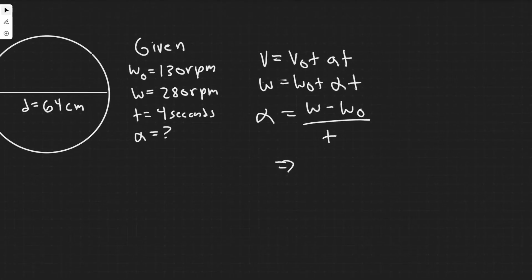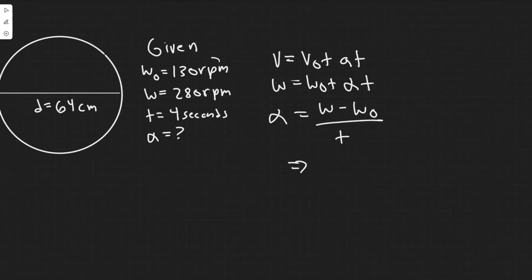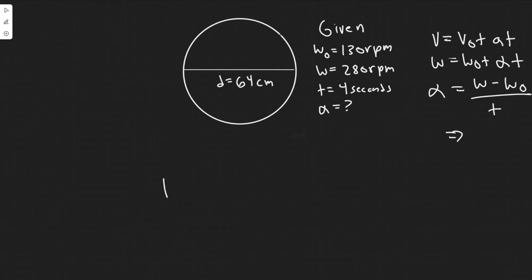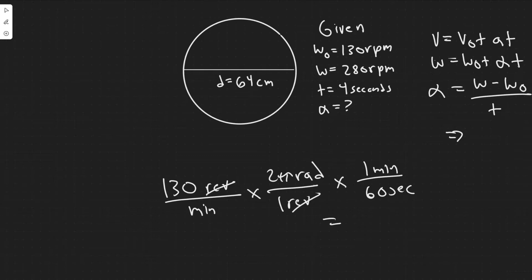There's an important thing to keep in mind when plugging in these values: the units can't be in rpm. They have to be in radians per second, because that's the standard unit. Notice the time is in seconds, but rpm is in minutes, so we need radians per second, not revolutions per minute. We're going to have to convert both values first.